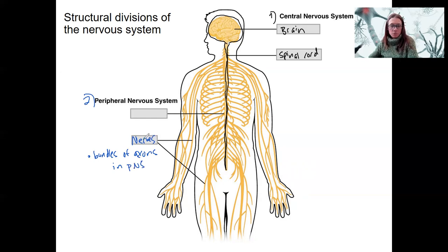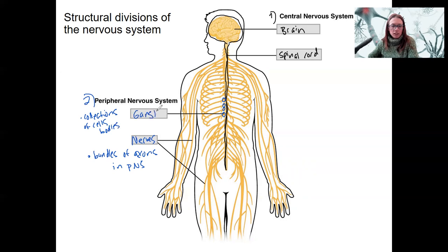The other component of the peripheral nervous system are these little ball-shaped structures. These are collections of cell bodies. There are some — not many — collections of cell bodies in the peripheral nervous system. These are called ganglia; one is a ganglion.